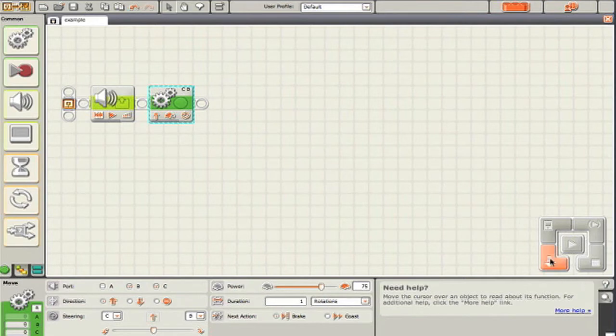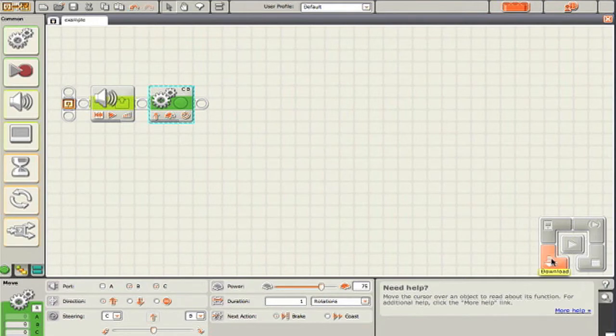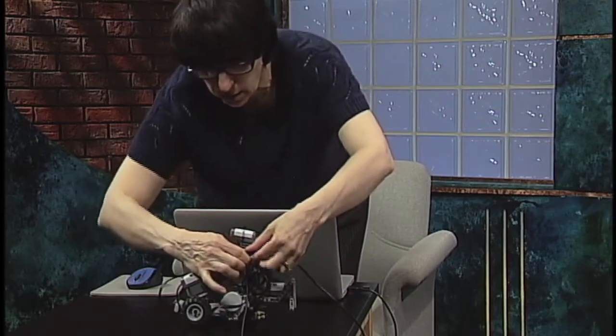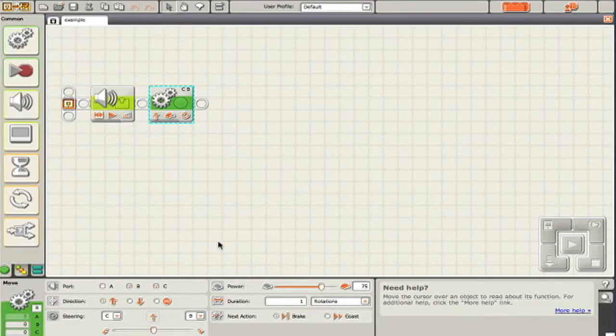So, let me download this program to the robot. Now, since the robot is going to be moving this time, I'm going to unplug the USB. So, we expect the robot to say have a nice day and then move forward one rotation of the wheel. Let's see if it works.